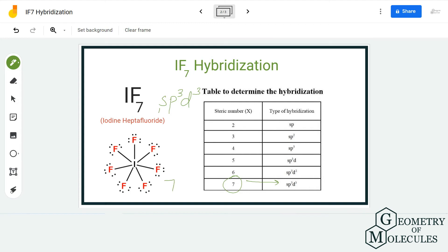If you count the number of orbitals in SP3D3, there are seven orbitals because there is one s hybrid orbital, three p hybrid orbitals, and three d hybrid orbitals. Hence, the hybridization for IF7 is SP3D3.